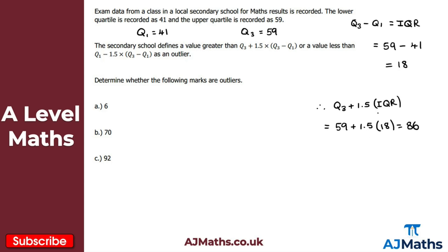I'm now going to do the same here for Q1 - 1.5 times the interquartile range. So Q1 - 1.5 lots of the interquartile range, in this case I'm going to get 41 - 1.5 × 18. Again, just put this into your calculator: 41 - 1.5 × 18, and I get 14 there. So what we're saying here is any value less than 14 would be an outlier and any value greater than 86 would be an outlier as well.